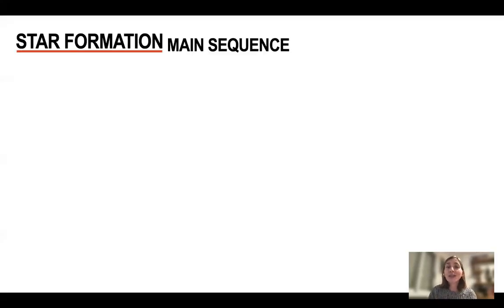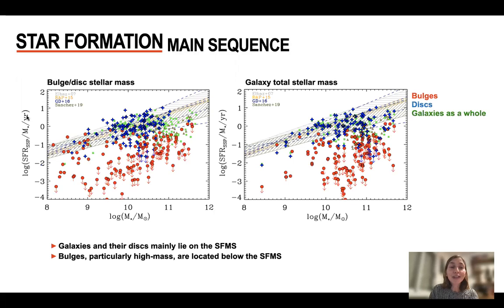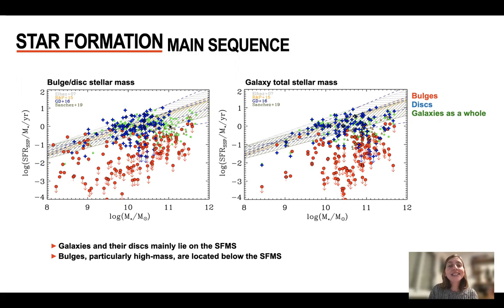Finally, we want to take a look at star formation, because at the end, galaxy growth is related to the formation of stars. We have the star formation rate plotted against mass — the left-hand side panel shows bulge or disk stellar mass, while the right-hand side panel shows results for total galaxy mass. The red data points are the bulges, blue data points are disks, and the green data points are galaxies taken as a whole.